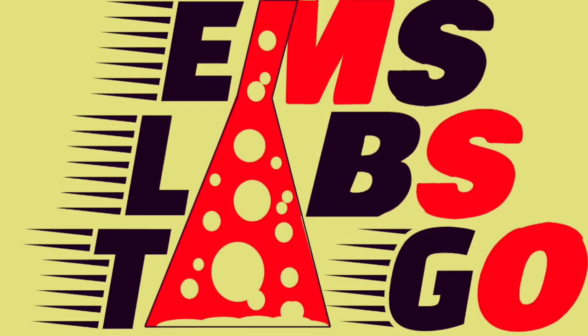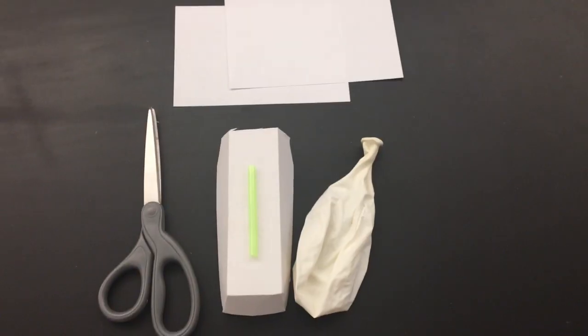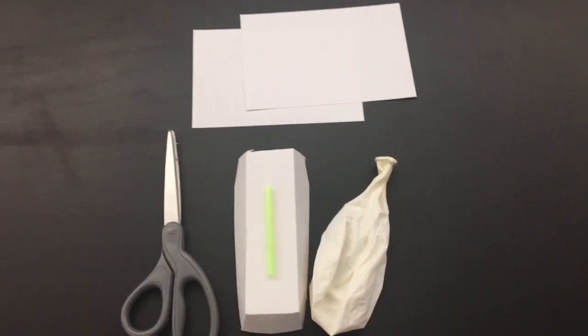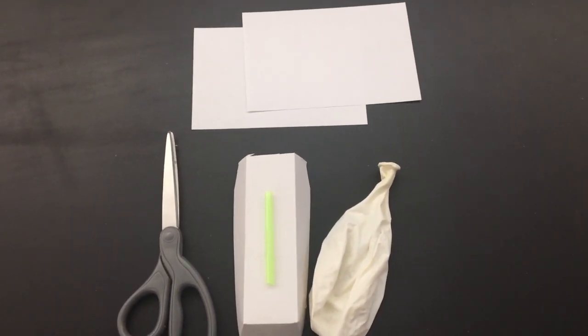Hello students, and welcome to the balloon cable car lab to go video. In your kit, you've got a straw, a hot dog carton, a balloon, a couple of note cards, and a string.